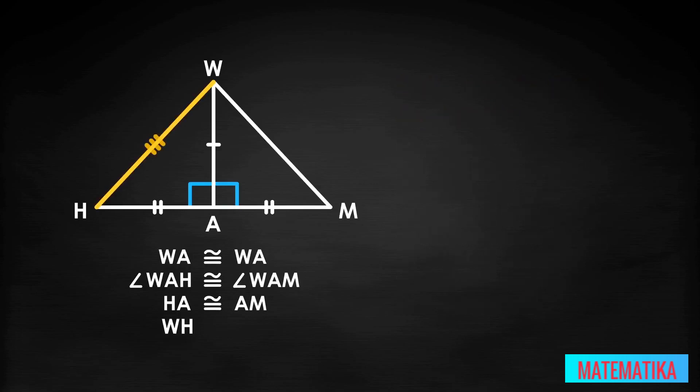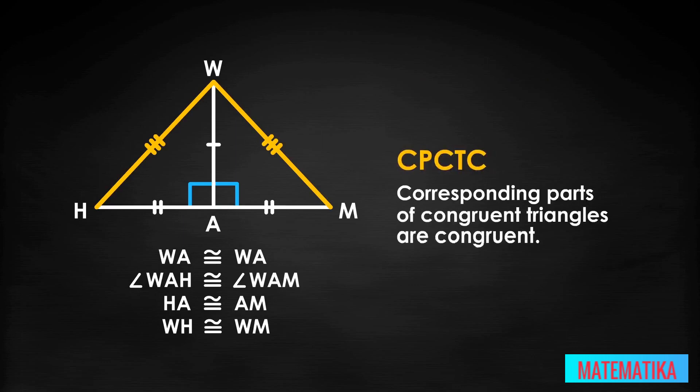Since we know these two triangles are congruent thanks to SAS, we also know that sides WH and WM are congruent, because of CPCTC: corresponding parts of congruent triangles are congruent.